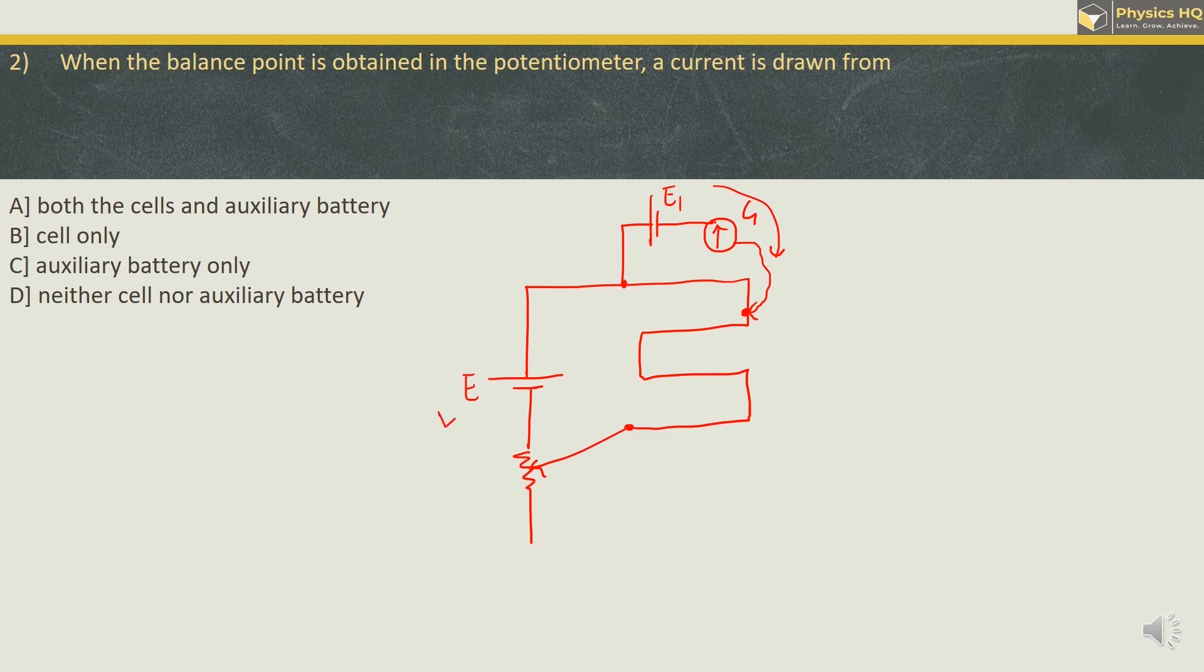The current is only drawn from the auxiliary battery. So the correct option is option C. Hope you all understood this.